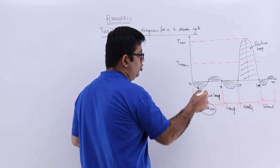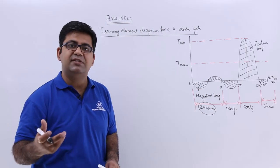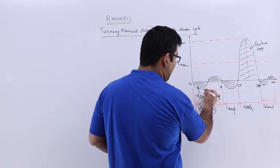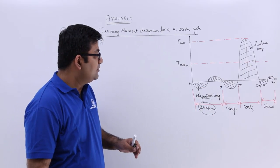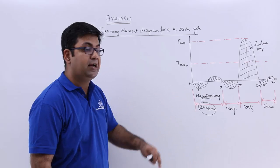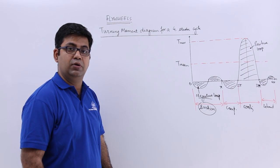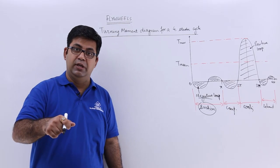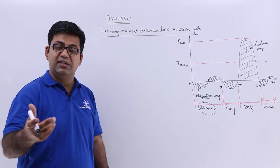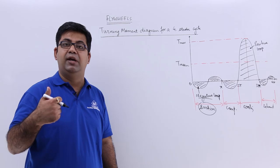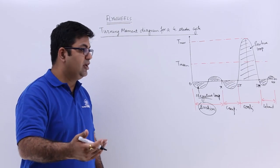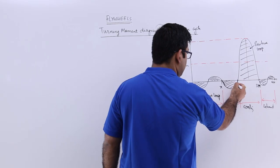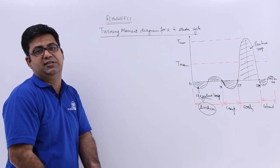During the suction stroke, the pressure inside the cylinder is negative, so there is a negative loop that is produced. In the compression stroke, work is done on the gas by the piston. This is the work which is provided to the gases. You have a higher negative loop because we are giving energy to the gases—we are compressing them.